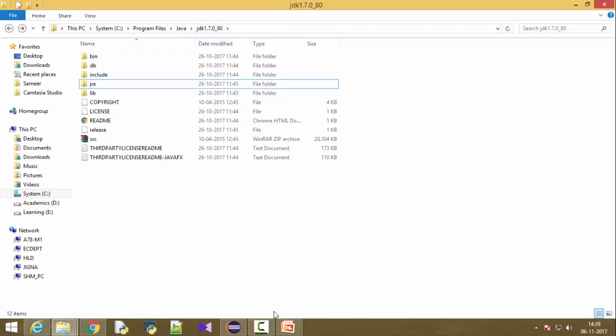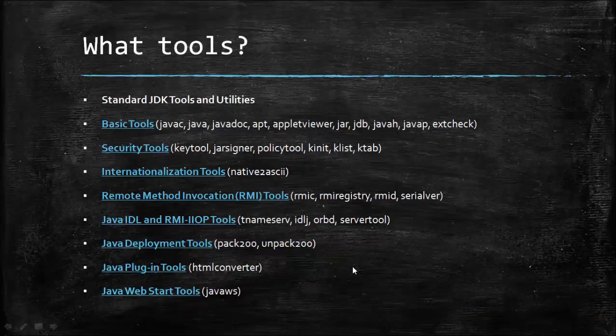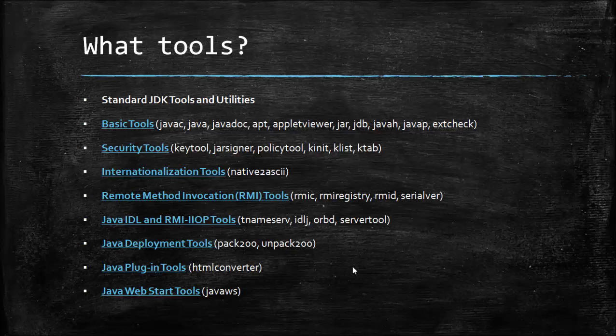As a summary: JVM is a concept — a virtual machine that doesn't exist anywhere physically. What you have is JRE, which is an implementation of JVM. Download JRE if you want to run Java files. If you want to create projects in Java as a developer, download JDK — JDK has JRE as well as development tools. Thank you, please put any comments below, subscribe, and share this video.